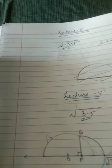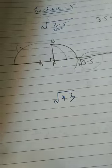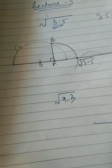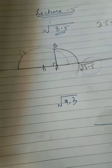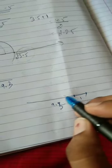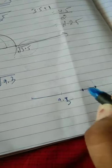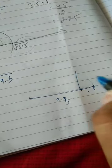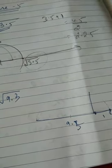For more practice, we will be solving question number 4 of exercise 1.5 in homework. That is under root 9.3. I will give you a hint: make a line of 9.3 cm, further extend 1 cm, take half, draw the circle, join this to the circle, and then mark on the line — which is your required number line.